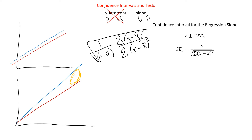So that's the confidence interval for the regression slope — b is going to be between those two values, hopefully close. The same rules apply: the higher the confidence, the bigger the interval; the lower the confidence, the smaller the interval but with lower confidence. Generally speaking, even with these we use a 95% confidence interval most of the time — that's just kind of standard procedure.